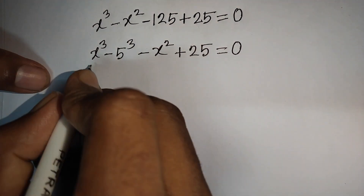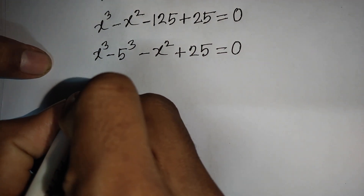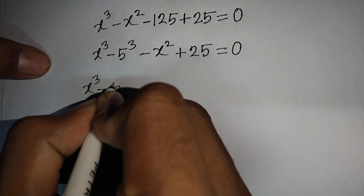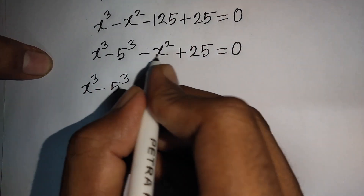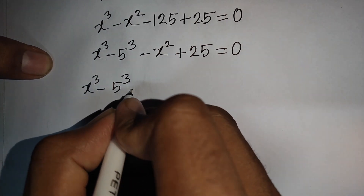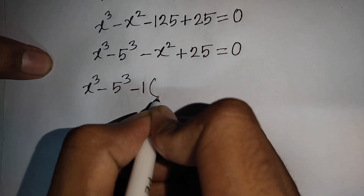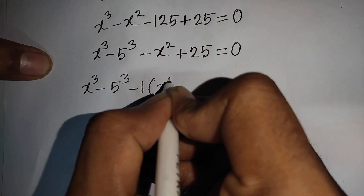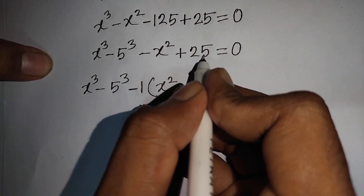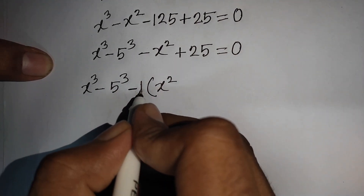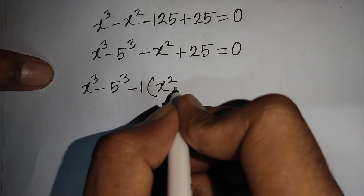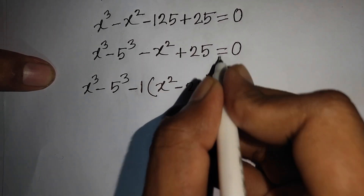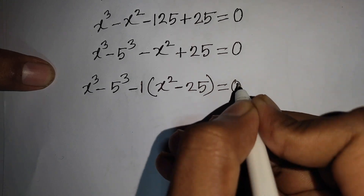Now we have x³ - 5³. From the remaining terms, we factor out negative 1, so negative 1 comes out of the bracket. This means x² plus 25 divided by minus 1 gives minus 25 inside the bracket, equal to 0.